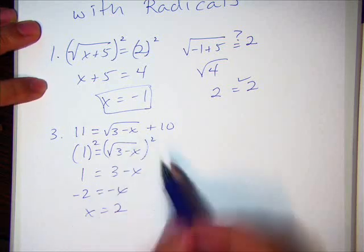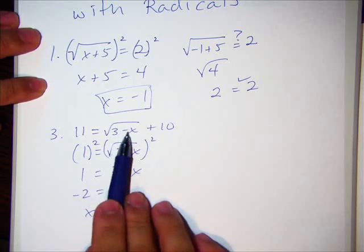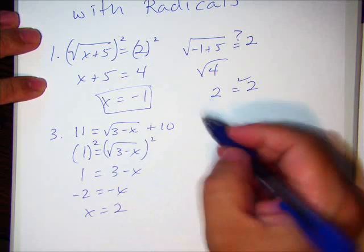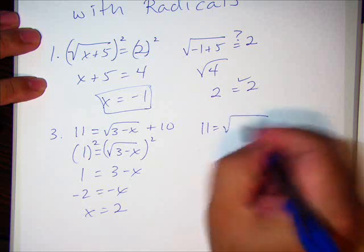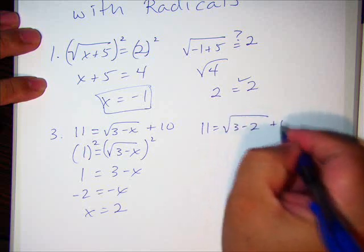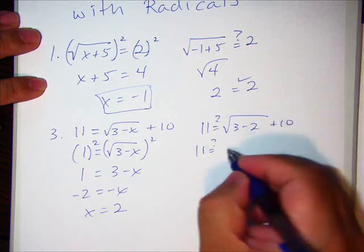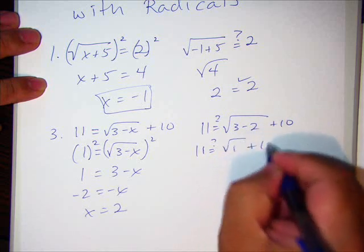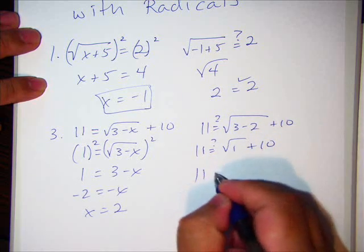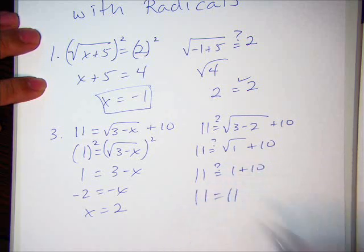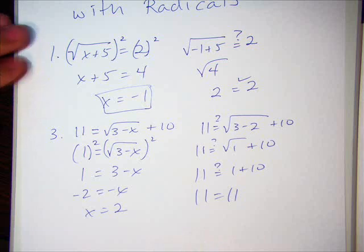Check your answers again. Here, 3 - 2 is 1. Square root of 1 is 1. 1 + 10 is 11. In case you missed that, plug it in. Remember, this is a question of equality. We don't know if it's equal. 1 + 10, yes. It turns out. Now I'm not going to work out every problem like that. So I don't know. Maybe I should go on to the next one.